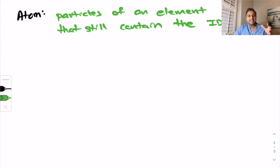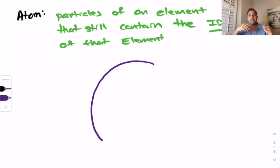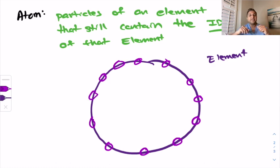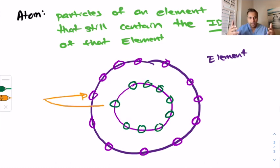The way an atom is designed is that it has multiple layers of atoms inside of it and these atoms come together and make that element. Think of an element as a house and then the little parts that go into the house like the doors, the windows, things like that, those are all atoms that make up the element or the house.